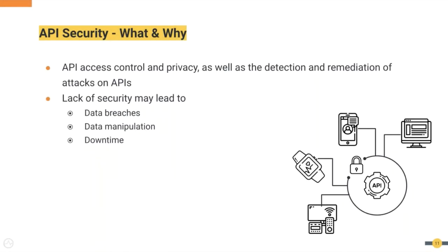API security involves securing data end-to-end, which includes security from a request originating from the client, passing through the network, reaching the server and the backend. While APIs are a key element in modern businesses, they can also be a major liability if they are not properly secured.